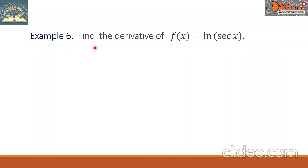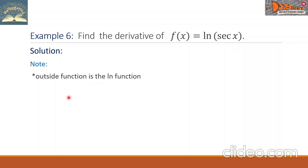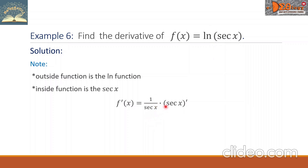Example 6: Find the derivative of f of x equals ln of secant x. The outside function is ln and the inside function is secant x. Taking the derivative: the derivative of ln of secant x is 1 over secant x, times the derivative of secant x, which is secant x tangent x. Simplifying, the secant x cancels with the secant x in the denominator, giving a final answer of tangent x.